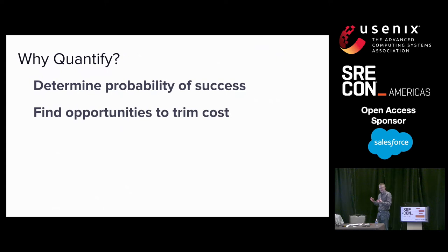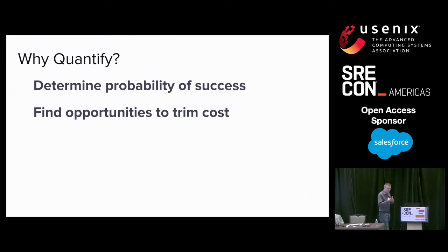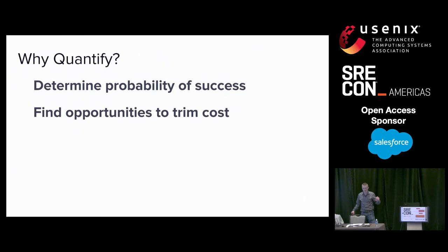So we've kind of laid out that Kafka is super critical. What do we want to measure and why do we want to measure reliability of Kafka? We can't say that Kafka is just going to be 100% reliable. Kafka supports replication and redundancy, and we can add a lot of replication as much as we want, but at a certain cost. The better we're able to quantify the probability of success based on the inputs into our Kafka setup, the more opportunities we can find to trim cost.